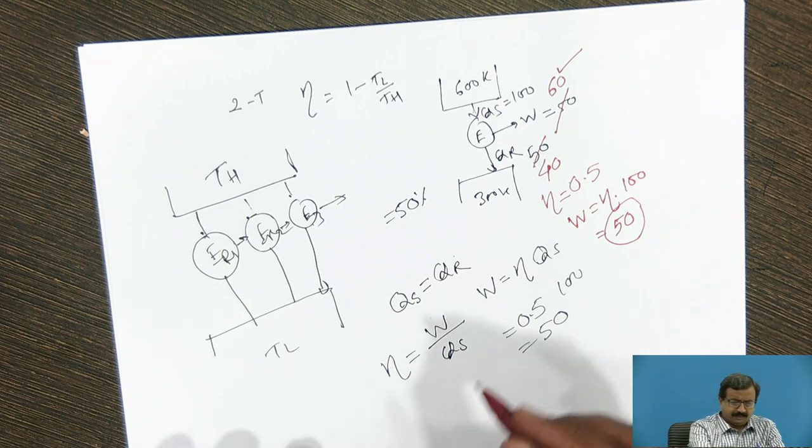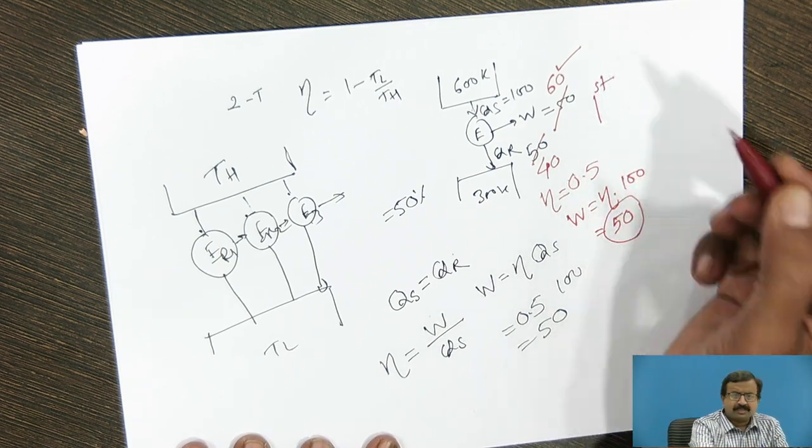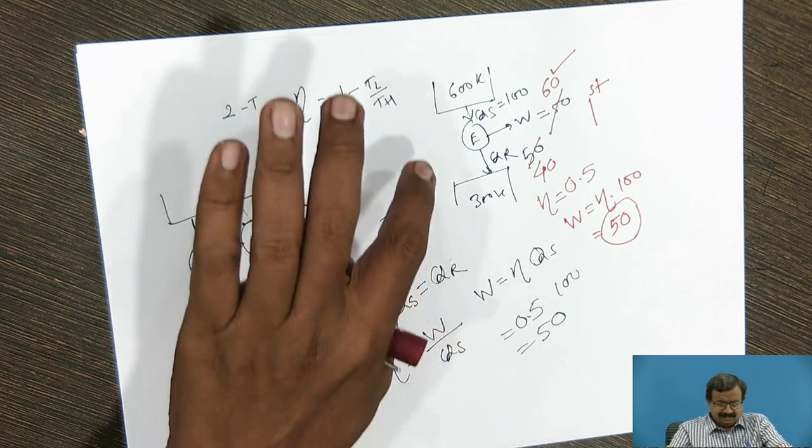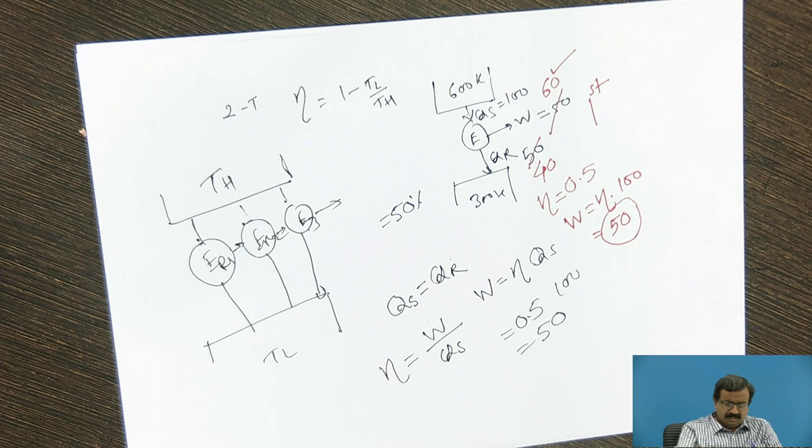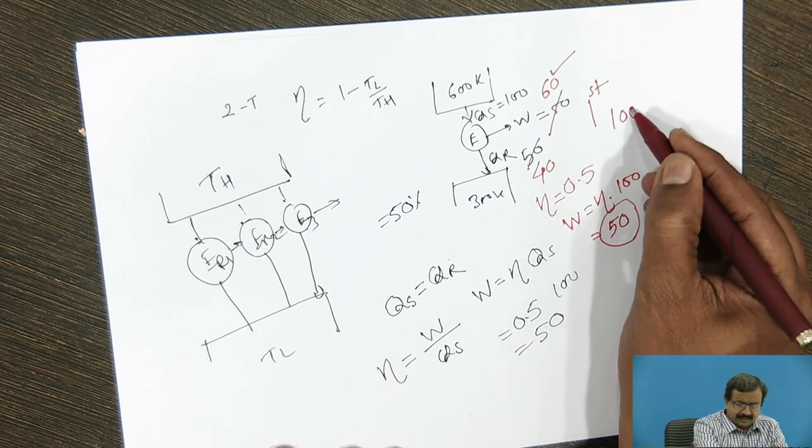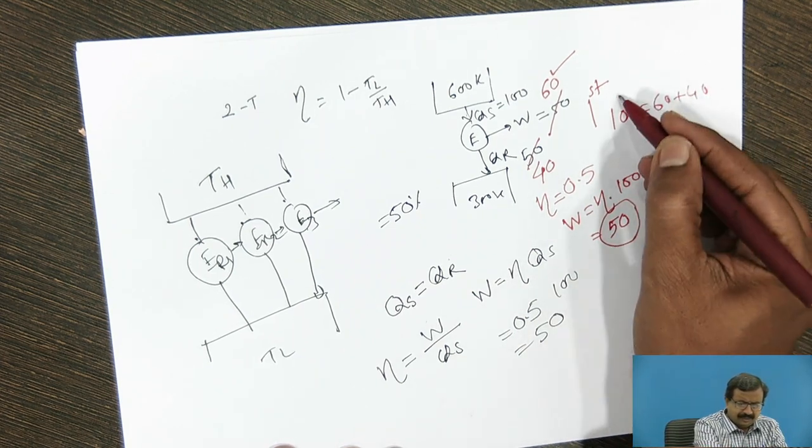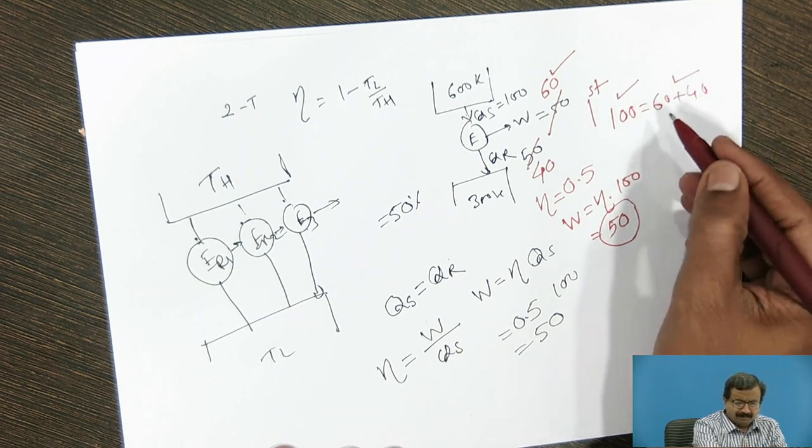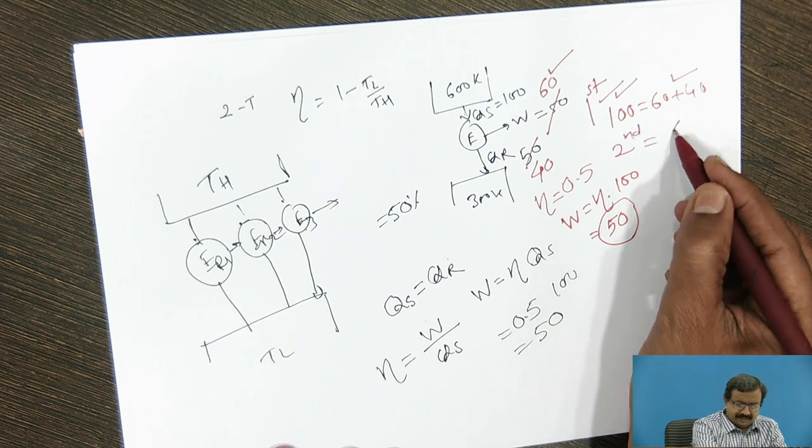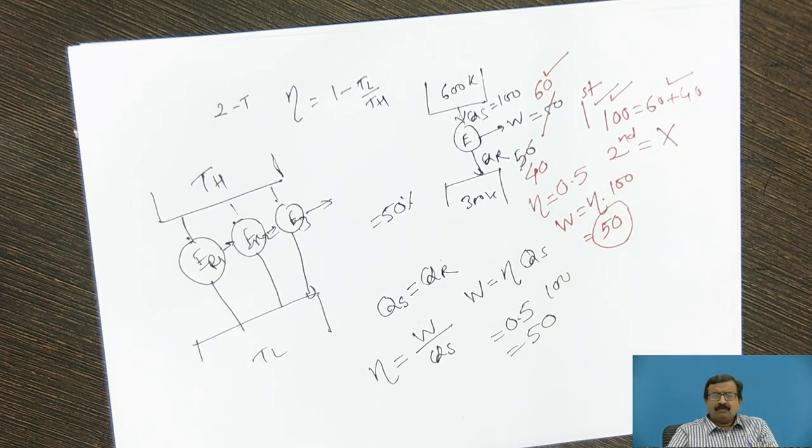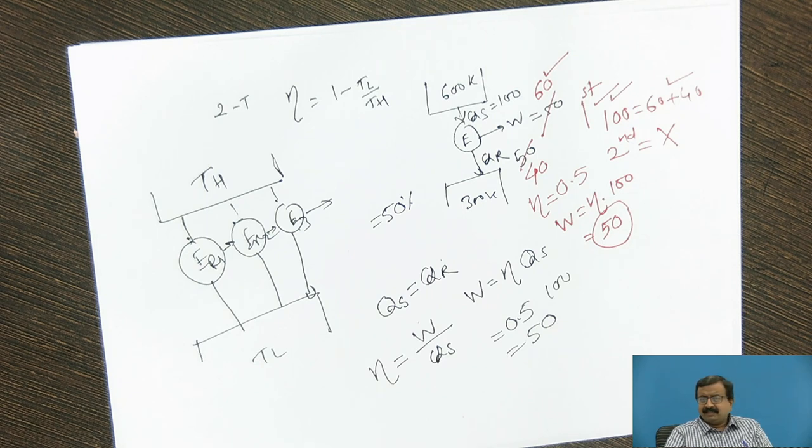So from the first law of thermodynamics, by the concept of first law, this analysis is valid because 100 is equal to 60 plus 40. So as long as I say that 100 is equal to 60 plus 40, it is algebraically correct. By first law, it is correct. By second law, it says that it is not possible. Why it is not possible? Because there is a restriction that any engine operating between two temperature reservoirs has a maximum efficiency of the Carnot cycle. That is why we are saying like this.